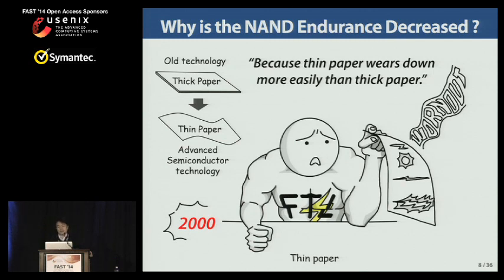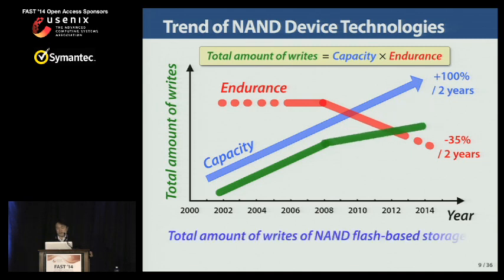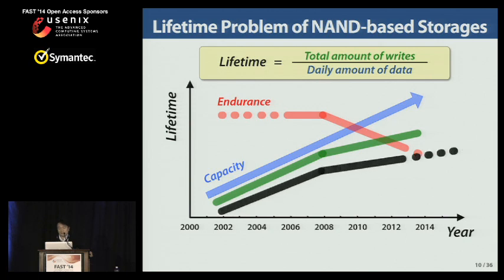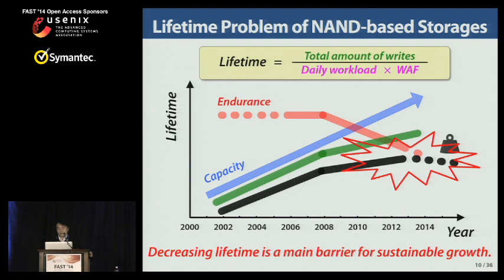At this point, everyone briefly understands low-level NAND characteristics. The total amount of writes means how much data the storage can handle throughout its lifespan. For NAND flash-based storage, it is proportional to capacity and endurance. However, the total amount of writes does not increase as much as expected because of decreasing NAND endurance. The lifetime of a storage system is defined as the total amount of writes divided by the daily amount of writes. If the daily amount of data is increased by the recent data explosion, the lifetime will be further degraded. Therefore, decreasing NAND endurance is regarded as a main barrier for sustainable growth in the NAND flash-based storage market.